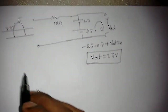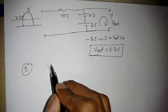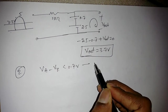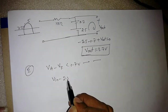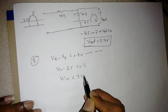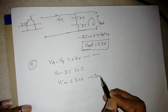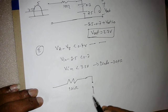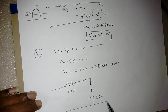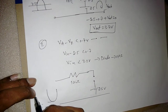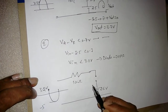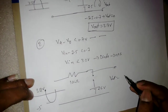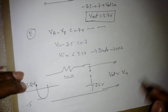In the second condition, when VA minus VK is less than 0.7V — that is, Vin minus 2.5 less than 0.7, or Vin less than 3.2V — the diode will be OFF, acting like an open circuit. The 1 kΩ resistor is there but the diode is open, so there is no effect of the 2.5V reference. Whatever we give as input, negative half cycle and values less than 3.2V, the diode stays open and the output is simply equal to Vin.